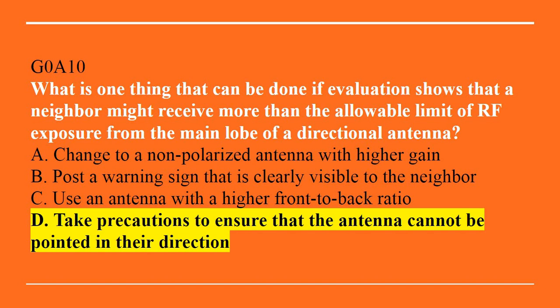G0A10: What is one thing that can be done if your evaluation shows that a neighbor might be receiving more than the allowable limit of RF exposure from the main lobe of a directional antenna? A, change to a non-polarized antenna with higher gain. B, post a warning sign that is clearly visible to the neighbor. C, use an antenna with higher front-to-back ratio. Or D, take precautions to ensure the antenna cannot be pointed in their direction. Answer is D — take precautions to ensure that the antenna cannot be pointed in their direction.